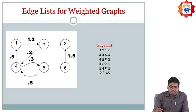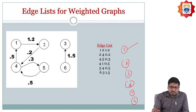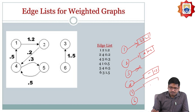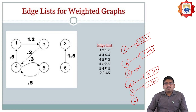For the weighted graph adjacency list, let us consider the vertices 1, 2, 3, 4, 5, 6. For vertex 1, there is only one edge connected — that is vertex 2 with weight 1.2. For vertex 2, the connected node is 4 with weight 0.2. For vertex 3, there is no edge connected, so it should be null. For vertex 4, node 5 is connected with weight 1.3. This is how we connect the edges of this weighted graph.